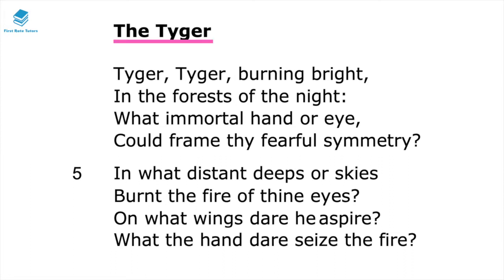The title of this poem is really interesting. This is one of William Blake's most famous poems. The title shows that this is about a tiger, and the speaker contemplates this creature as both beautiful and powerful, but also really fearsome. So the speaker in this poem contemplates the existence of this fearsome creature.